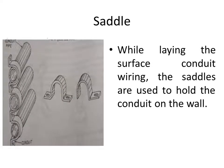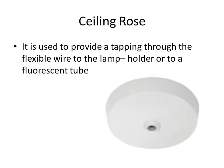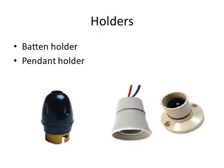A saddle is used to fix the conduits on the wall. Sockets have an insulated base with three terminal sleeves. Ceiling roses are used to provide tappings with flexible wire to lamp holders or fluorescent tubes. Holders include lamp holders, batten holders, and pendant holders — there are two types.